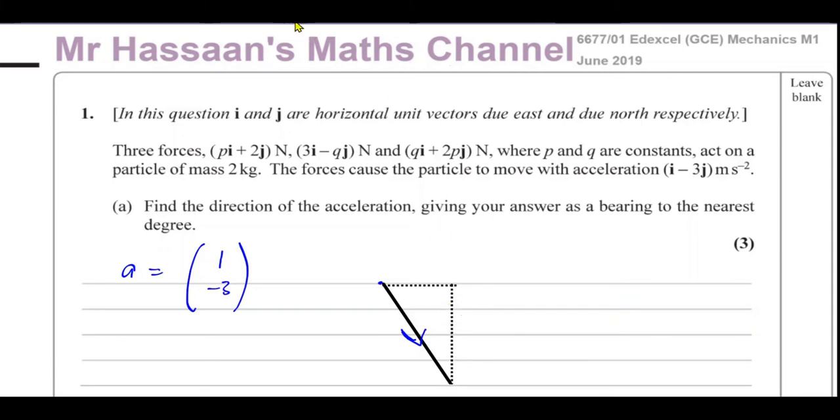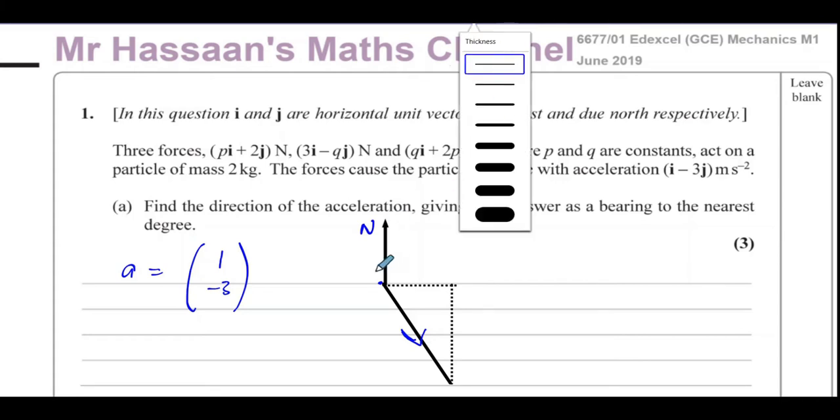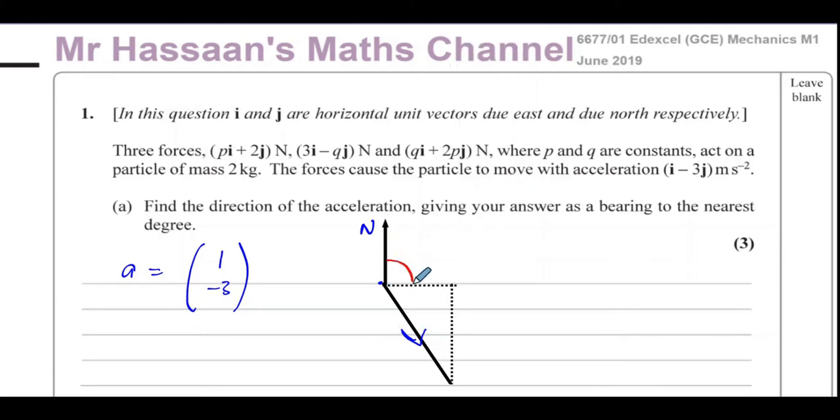Now, we've got to find this as a bearing. So we've got to find it from the north line. Bearing is always measured from the north line and always measured in the clockwise direction. The bearing is measured from here in the clockwise direction. This angle here is the bearing which describes the direction of the acceleration. This must of course be 90 degrees.